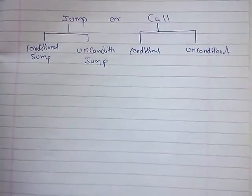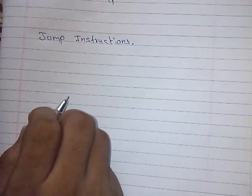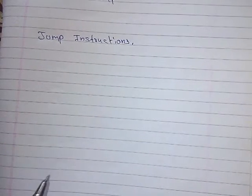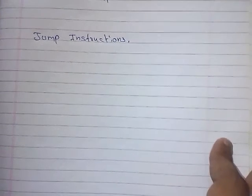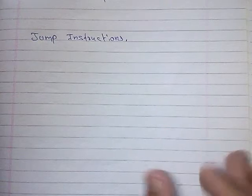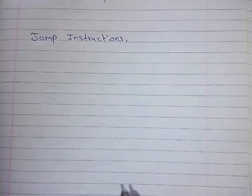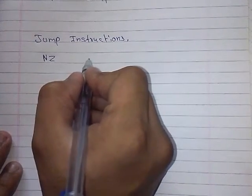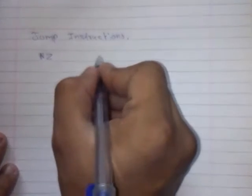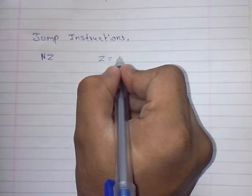First, we will see jump instructions. Jump instructions are of two types: conditional jump or unconditional jump. We will see conditional jump and what type of conditions can be there. For making any conditions, we make use of the flag register. For example, NZ means if not zero — this means that the content of the zero flag in the flag register is not zero.